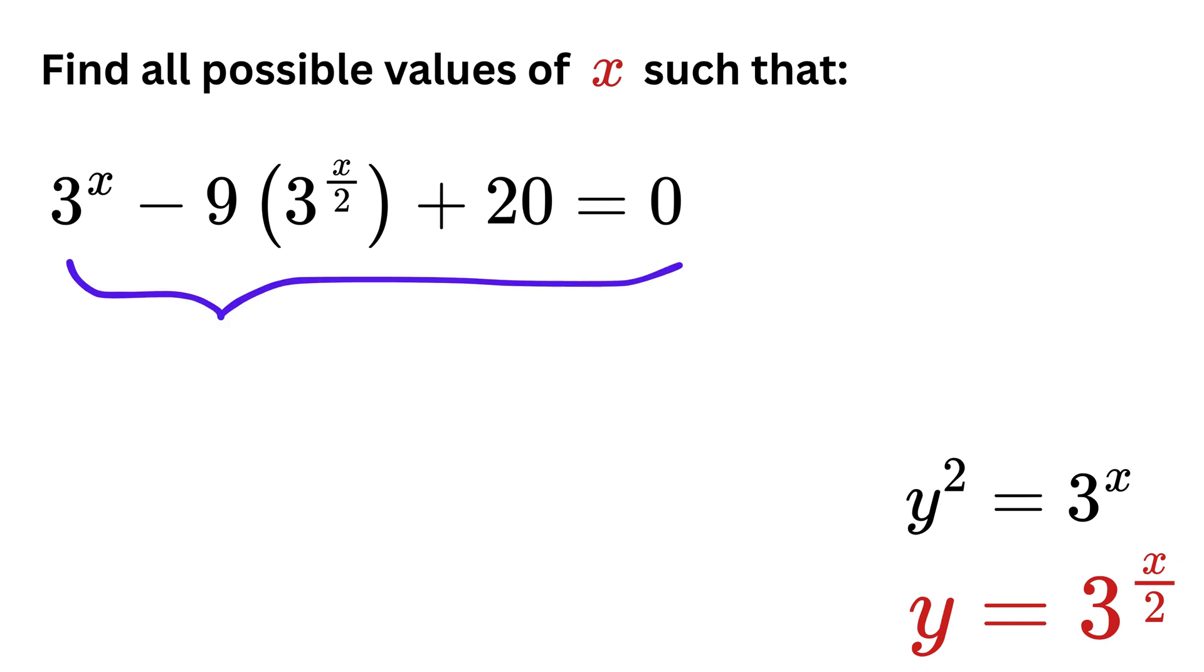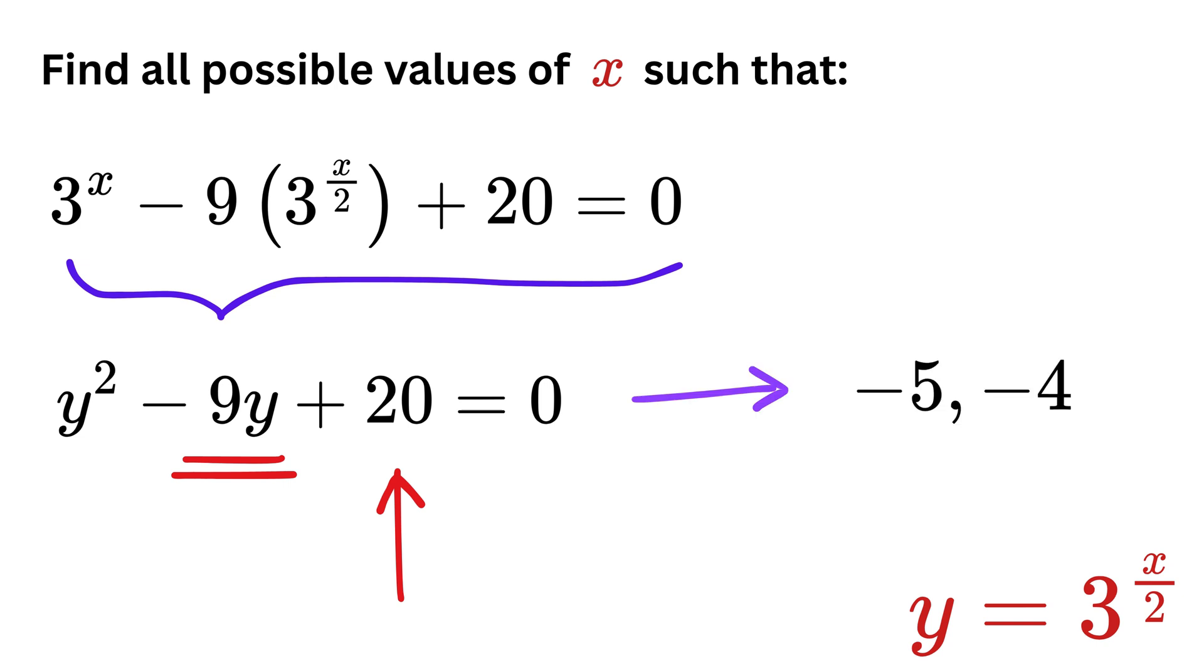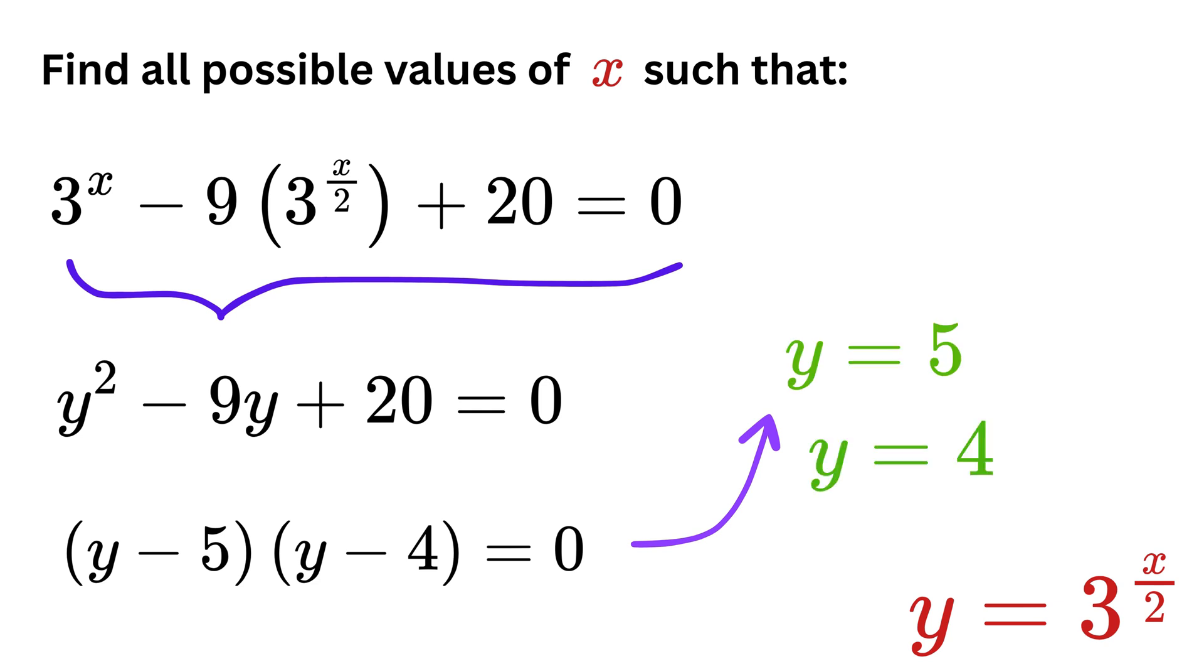Hence finally we have y squared equals 3 raised to x, so our whole equation simply becomes y squared minus 9 times y plus 20 equals 0. Now that looks like a familiar quadratic equation in y. We look for two numbers that multiply to 20 and add to minus 9. Those two numbers turn out to be minus 5 and minus 4. Hence the factorization is y minus 5 times y minus 4 equals 0. By the zero product rule, either y equals 5 or y equals 4.